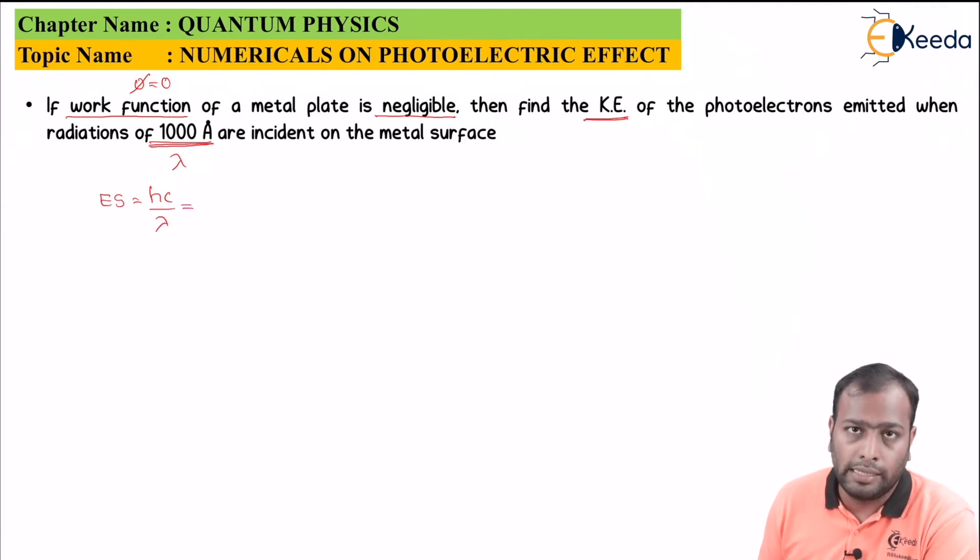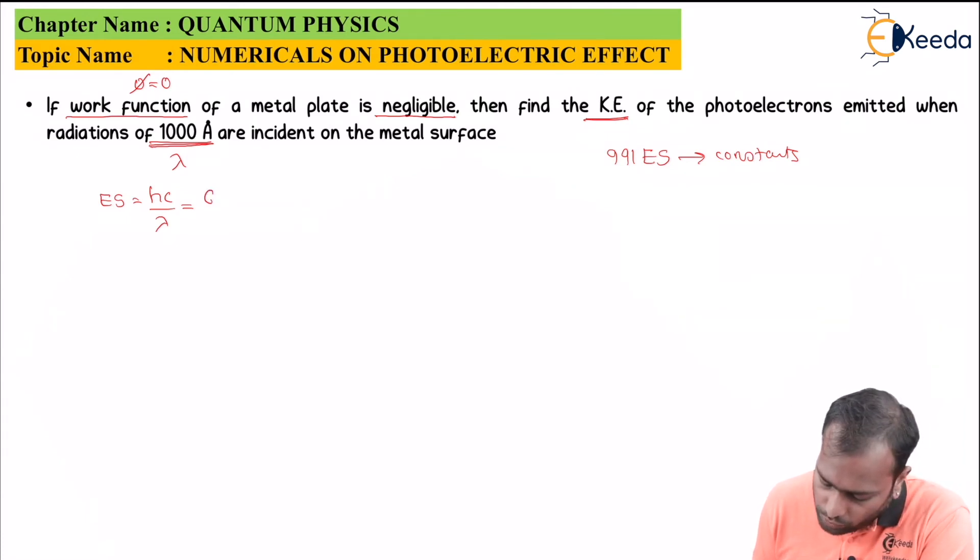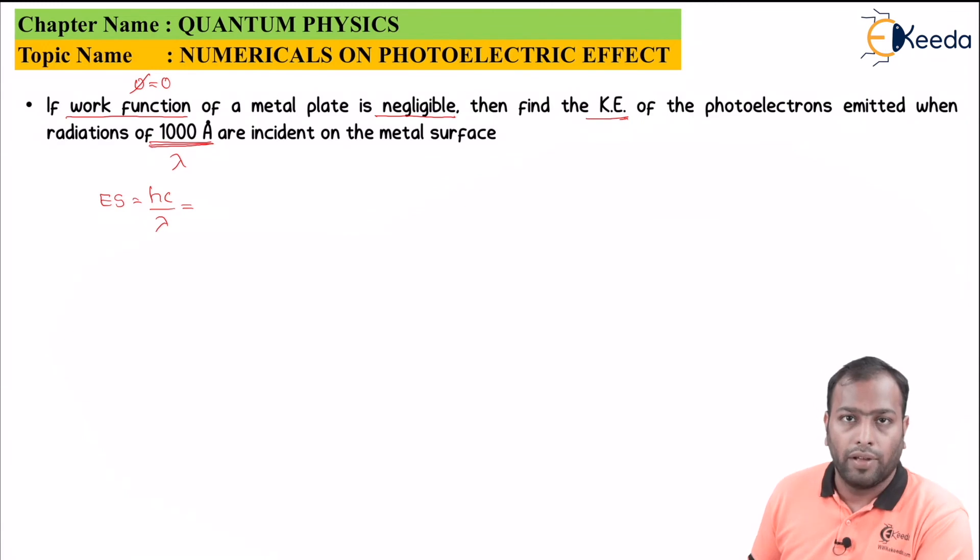Now the value of h and c is available on the 991 ES calculator as constants. You can directly use those. But if this is not the case then you have to substitute the values, the value of h as 6.62 into 10 to the power minus 34. Now if you are having the 991 ES calculator or the upgraded version of calculator you are having the constants value. So in 991 ES calculator the constants value are directly available.